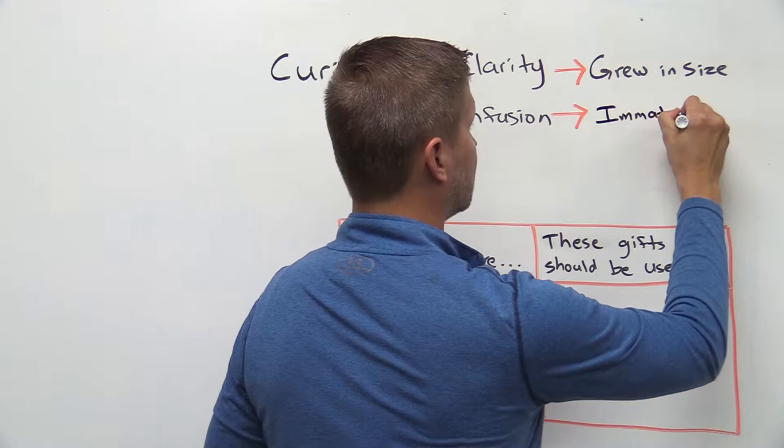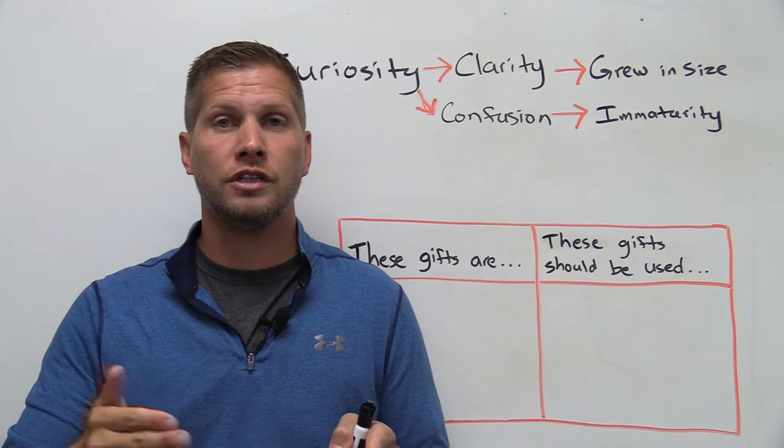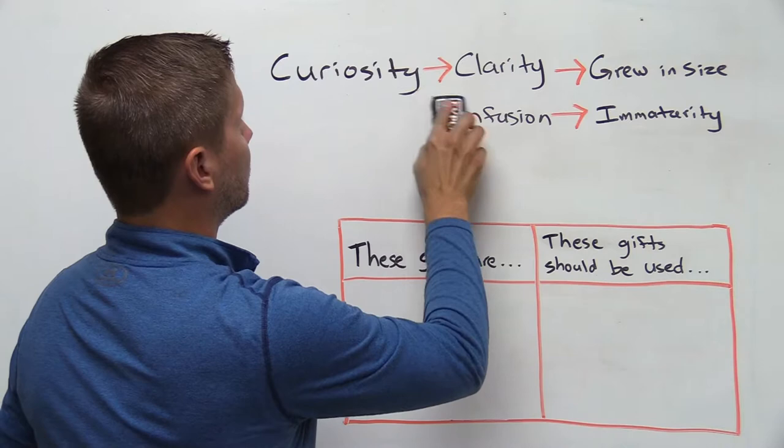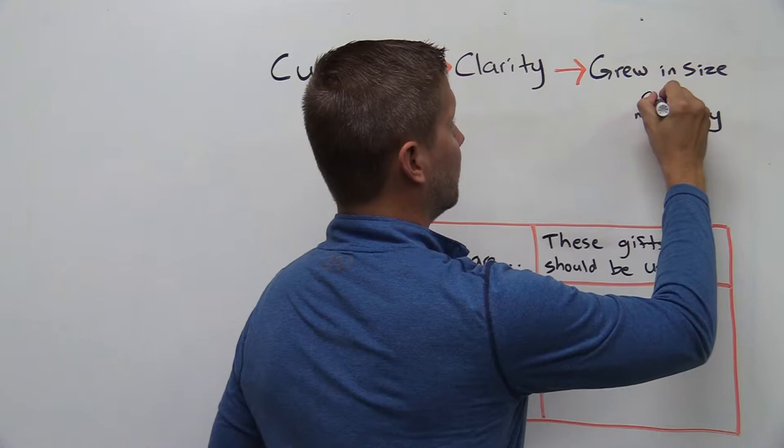Paul is not okay with this and so what he does is he addresses the gift of speaking in tongues in 1 Corinthians chapters 12, 13, and 14. And in doing that, he takes away their confusion and he enables these spiritual gifts to lead to clarity so that the church can grow in size and maturity.